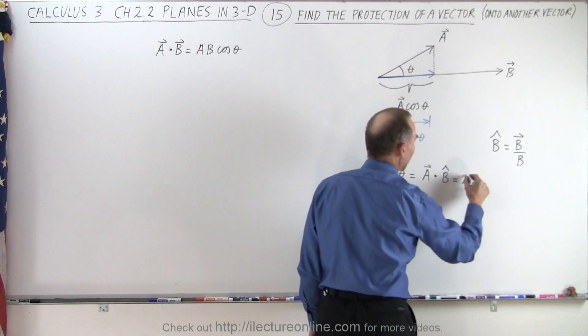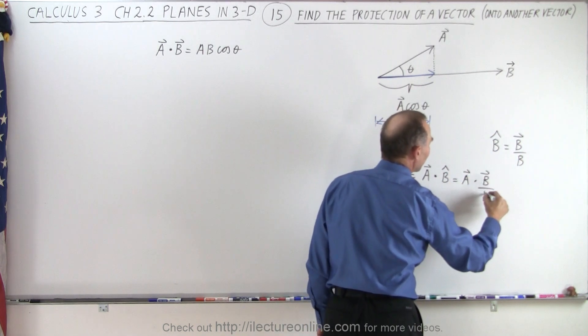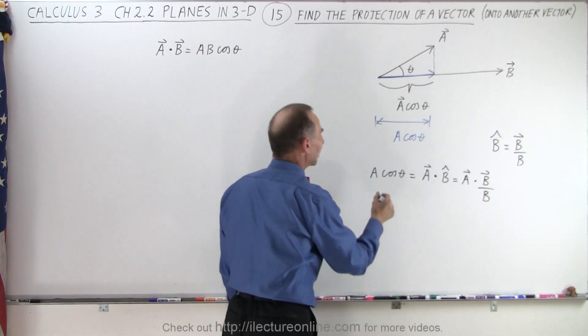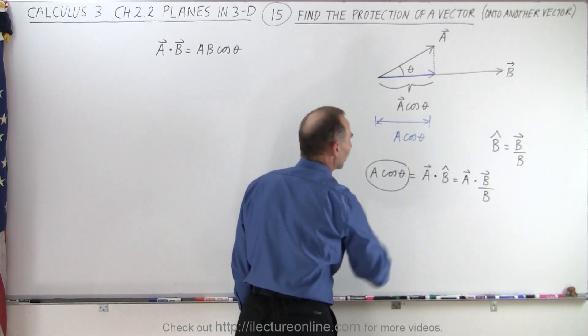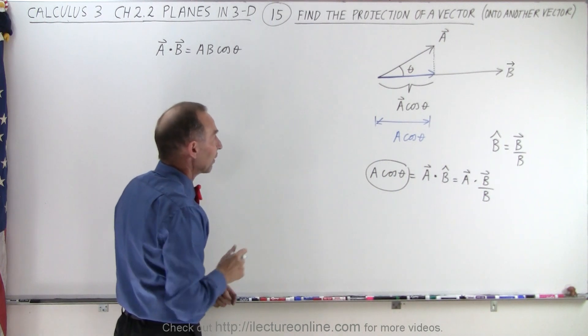In other words, we take A times the dot product of B divided by the magnitude of B. And so that gives us A times the cosine of theta, which is the length of the vector A projected onto vector B.